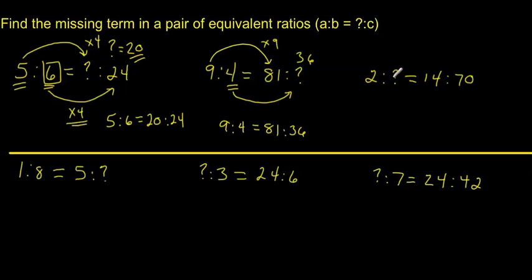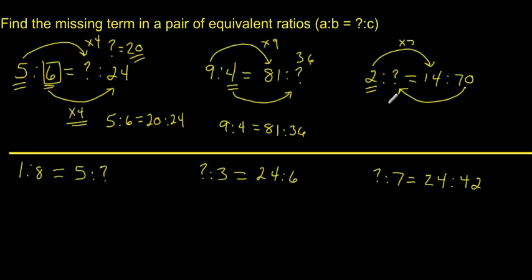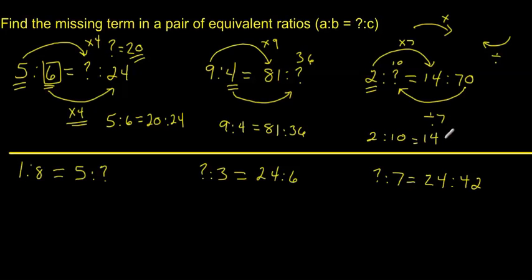We've got 2 to something, which is equal to 14 to 70. Take what you know — 2 times what makes 14? Two times 7 makes 14. That means I have to take this 70 and divide. Because I've got the larger number on this side, but I need the number I started with on the other side, which is going to be smaller. If I'm going from smaller to larger, I multiply. But if I'm going from larger to smaller, I divide. So I take 70 and divide by 7, which gives me 10. So 2 to 10 is the same thing as 14 to 70.